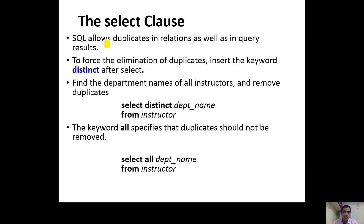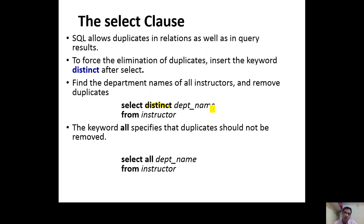SQL allows duplicates in relations as well as in query results. But if we want to force our query to return only distinct values, we can use the DISTINCT keyword with SELECT. For example, to find the department names of all instructors and remove duplicates — since more than one instructor may work in the same department — we write SELECT DISTINCT DEPARTMENT_NAME FROM INSTRUCTOR.